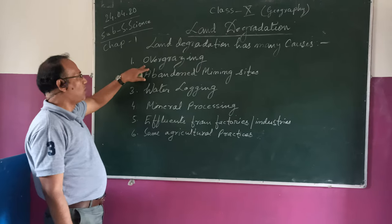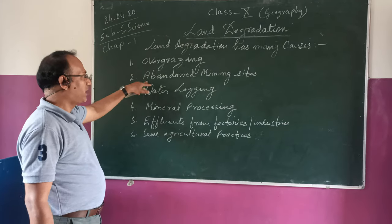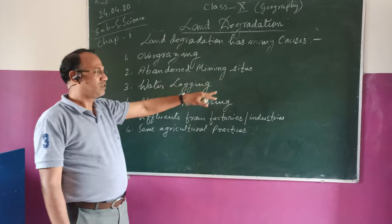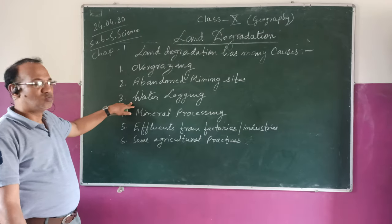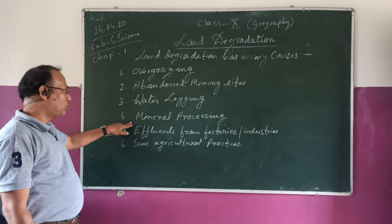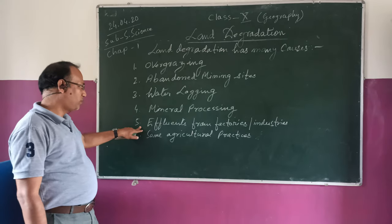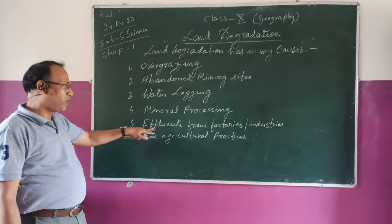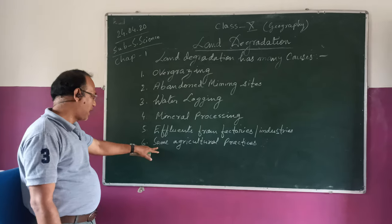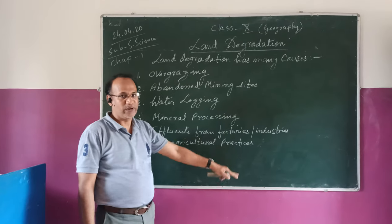Land degradation has many causes. First, overgrazing. Second, abandoned mining sites. Third, waterlogging. Fourth, mineral processing. Fifth, effluents from factories or industries. And sixth, some agricultural practices.